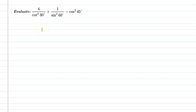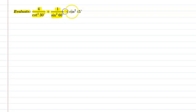Hello friends. First of all let us understand the question. The question is: evaluate 4 upon cot square 30 plus 1 upon sin square 60 minus cot square 45.